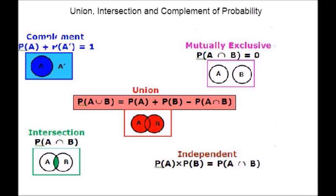In probability, everything will be based on the event only. An event is nothing but something that has happened and is always associated with some experiment. For example, if you are performing the experiment of throwing a dice, then there can be numerous events associated with it — one of which can be the number on the top being a multiple of 3.